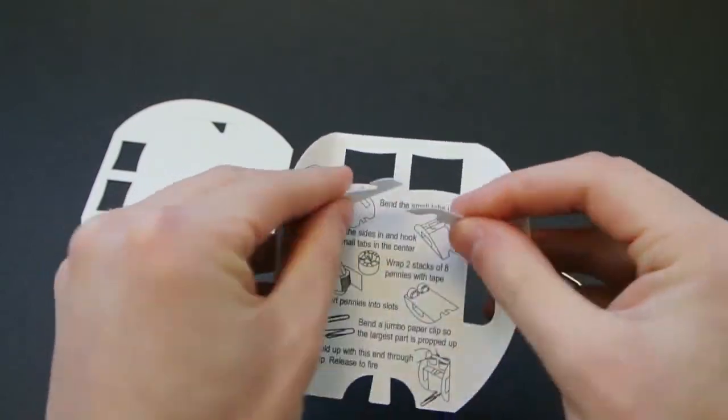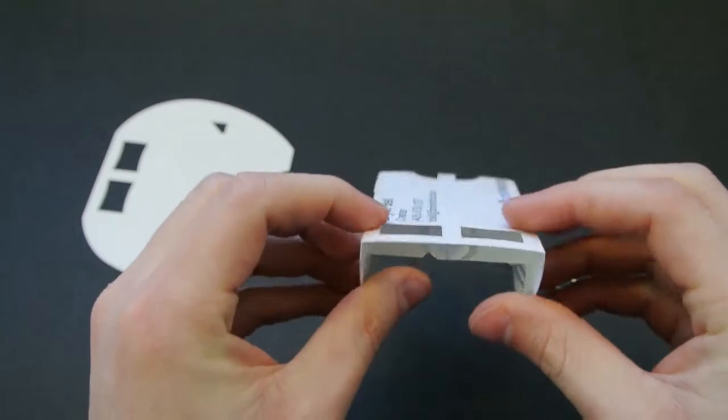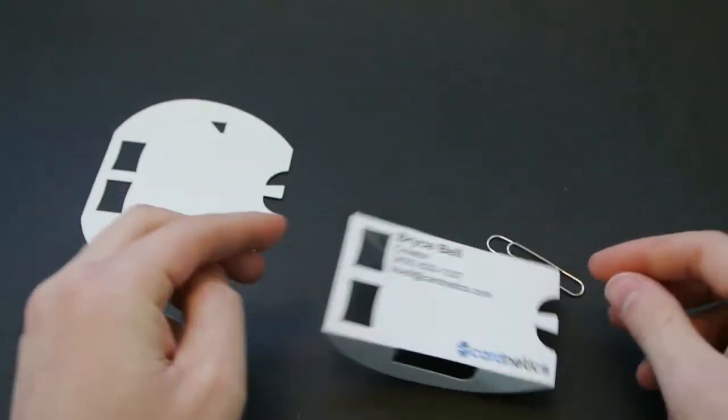It's pretty easy to operate. You just pull these tabs into the center and interlock them. And this forms the main body of the trebuchet.